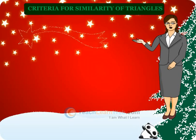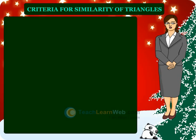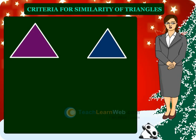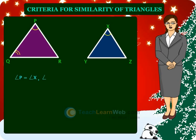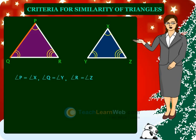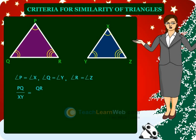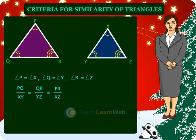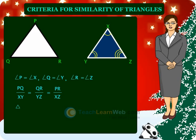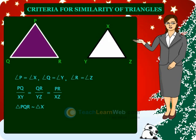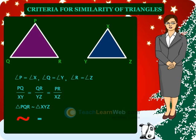Criteria for similarity of triangles. Consider the given two triangles. Triangles PQR and XYZ are similar if angle P equals angle X, angle Q equals angle Y, angle R equals angle Z, and PQ/XY equals QR/YZ equals PR/XZ. Symbolically, we write similarity of two triangles as triangle PQR is similar to triangle XYZ. This symbol stands for 'similar to'.